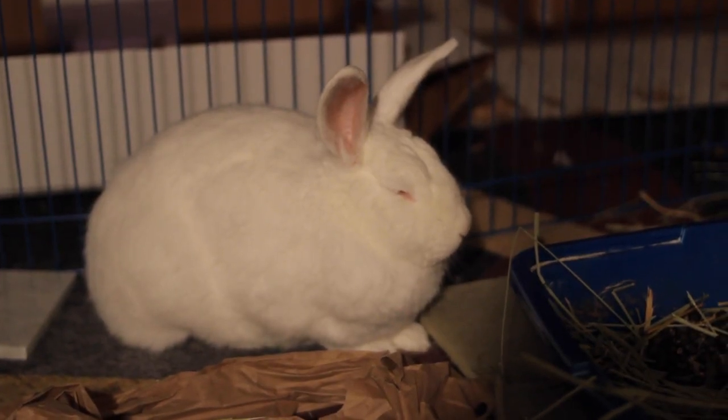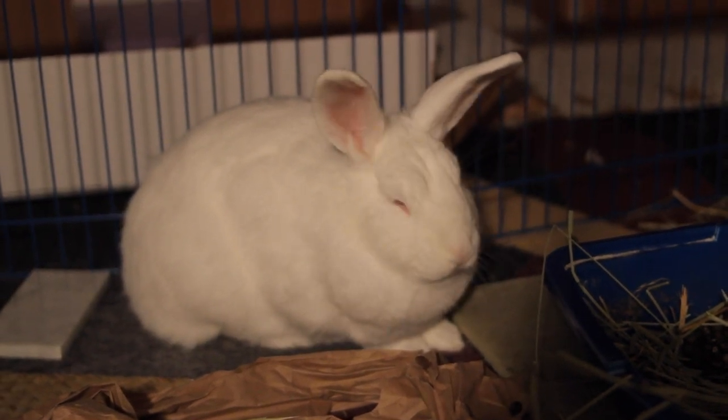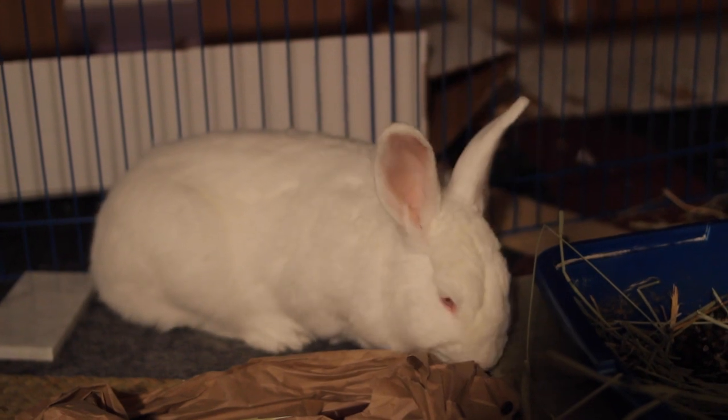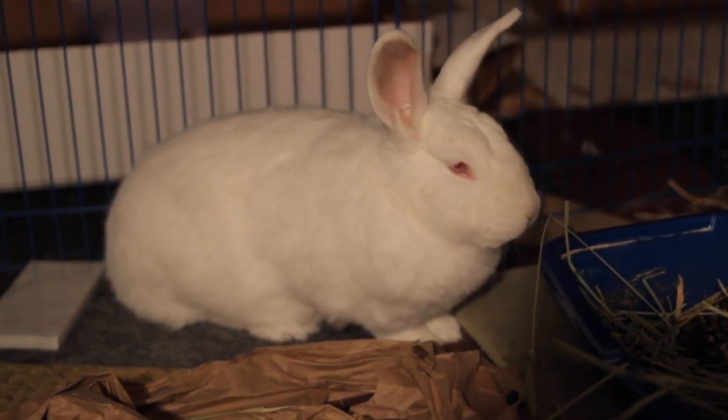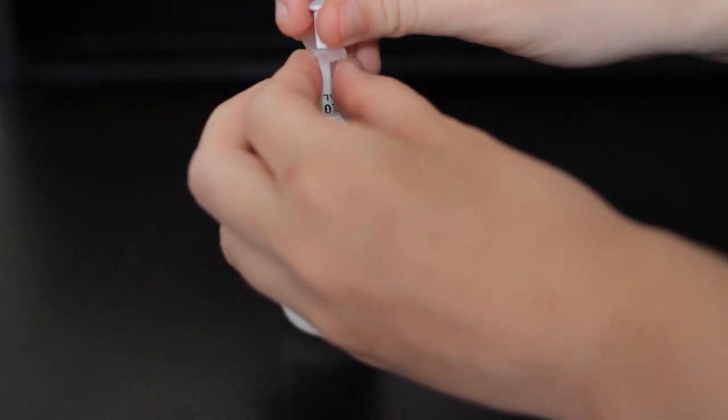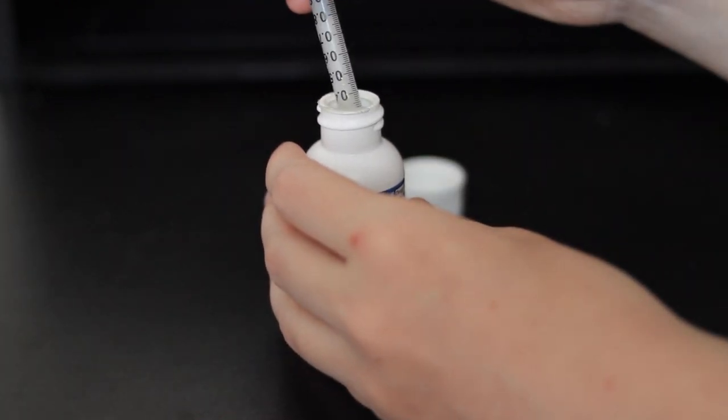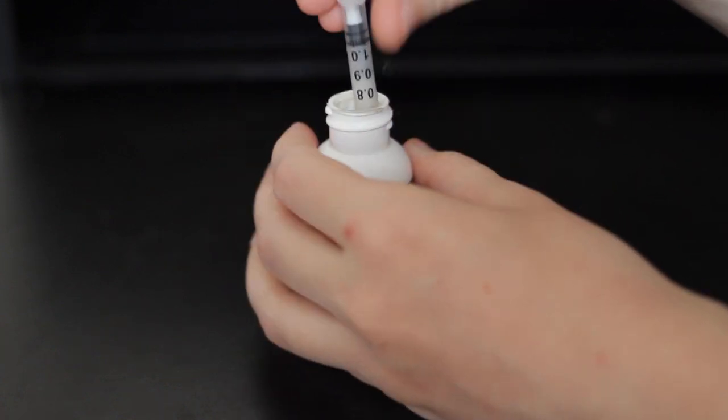What you will commonly see when your rabbit has gas is your rabbit will be pressing their belly against the ground. You will also probably see symptoms such as your rabbit is refusing to eat and they might not be pooping. So what you should do if you notice these symptoms is you should give your rabbit one cc, one milliliter of this simethicone every hour for three hours. If the problem is gas, your rabbit should be back to normal within that amount of time.